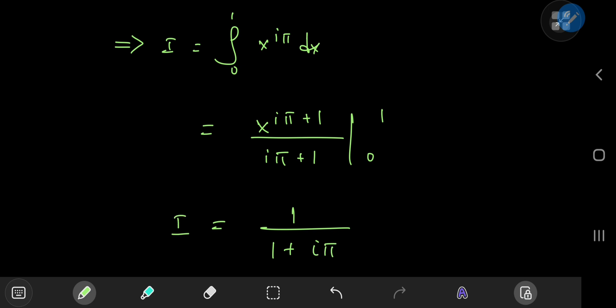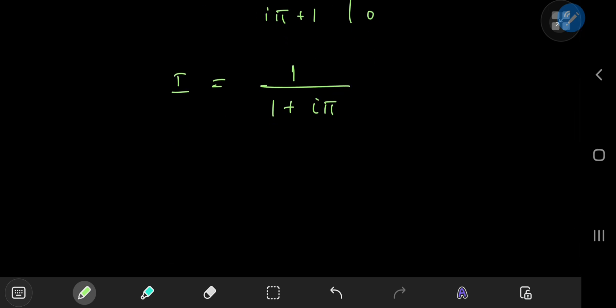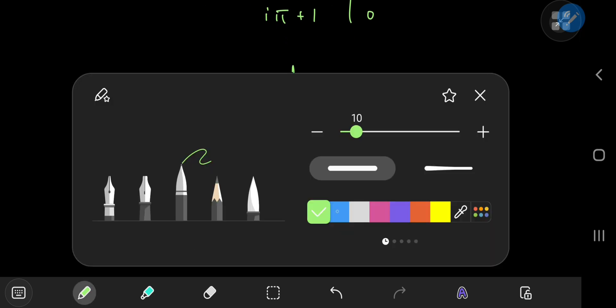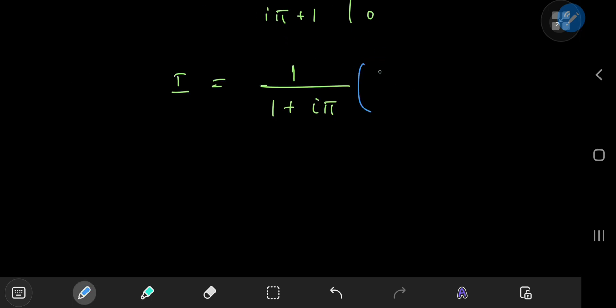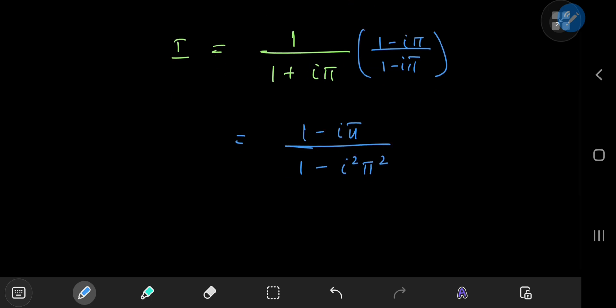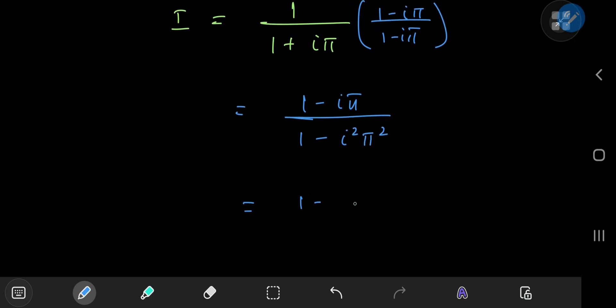And it'll be nice to separate this result into real and imaginary parts. So for that we invoke the conjugate. So we have to expand by 1 minus i pi. Okay cool. So in the numerator you have 1 minus i times pi divided by 1 minus i squared pi squared. And i squared is just negative 1 so you finally have 1 minus i pi divided by 1 plus pi squared.